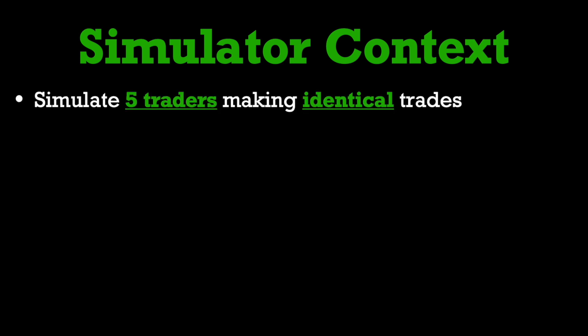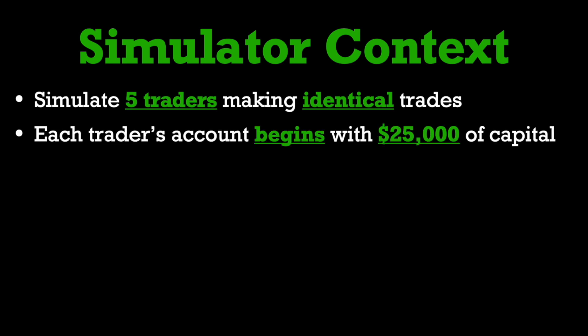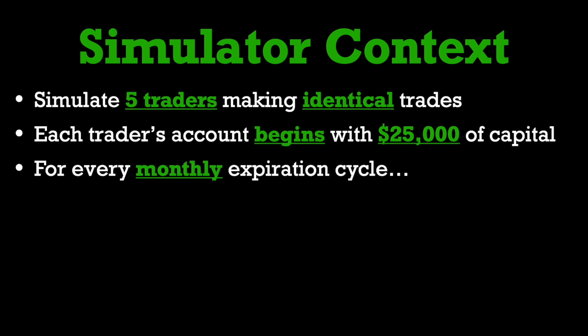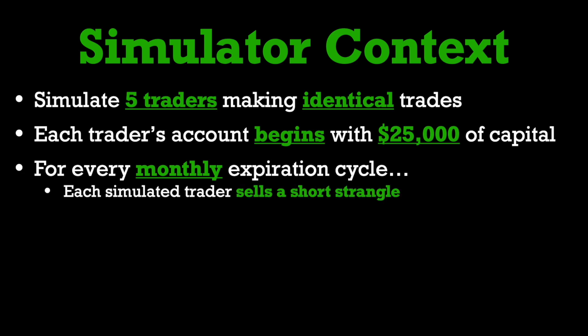Before I show you the simulation itself, I need to give you some brief context. I'm going to simulate five different traders with my program, and they're all going to make the exact same kind of trades. Each trading account is going to begin with a starting capital of $25,000. Every single monthly expiration cycle — essentially 12 times a year — each trader is going to sell a short strangle on some stock.